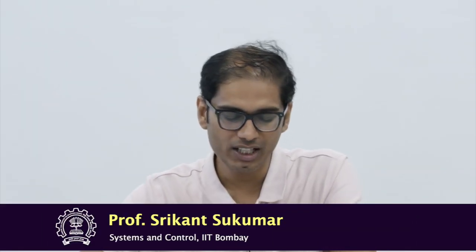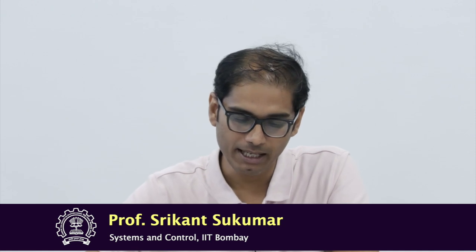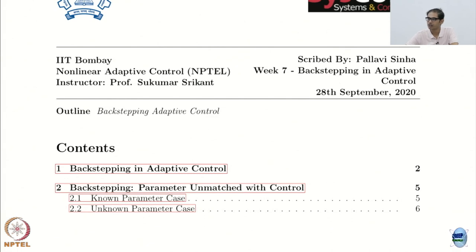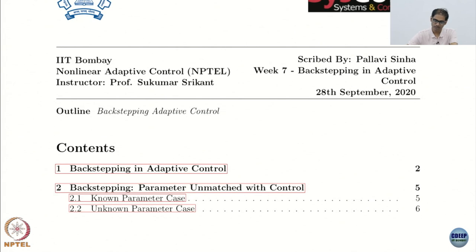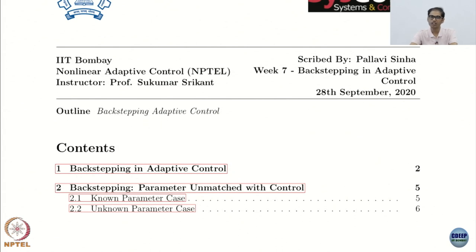What we want to do is briefly look at what is covered in the adaptive control course, and this is backstepping adaptive control. You already know what backstepping is. It turns out the name backstepping came from the KKK — Kanellopoulos-Kokotovic-Krstic. Krstic named it as backstepping, although the method was known before that. He is one of the key researchers in adaptive control, and the entire concept and utility of backstepping came from adaptive control.